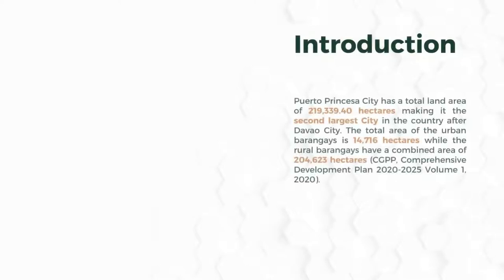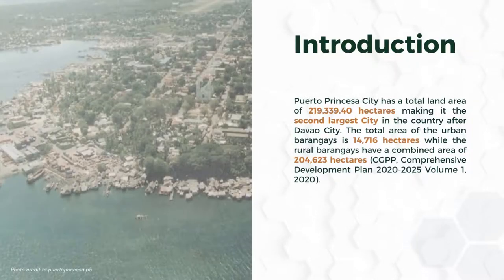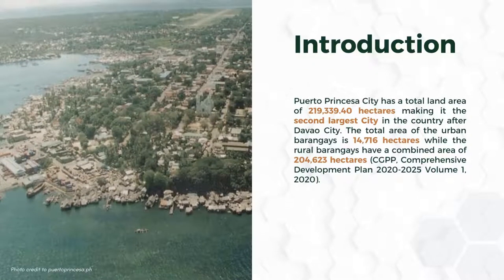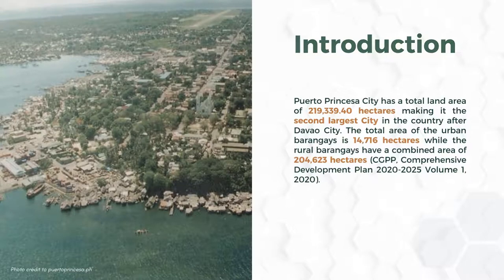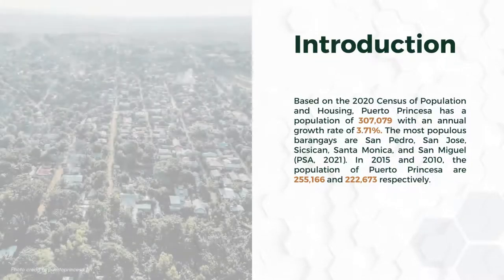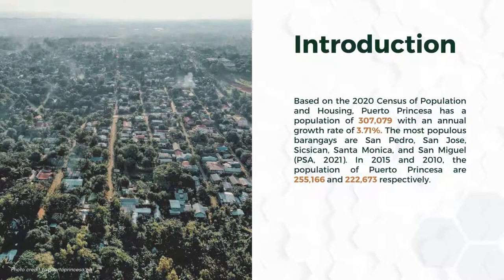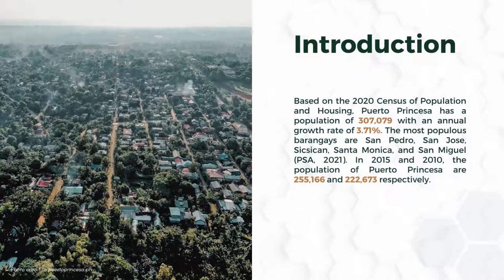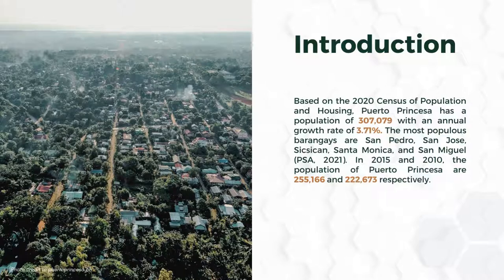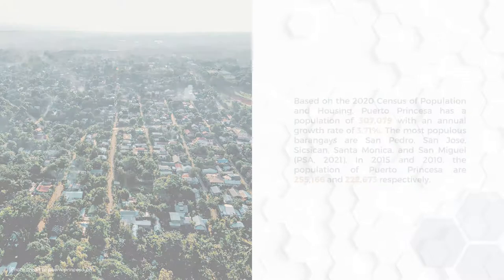Puerto Princesa city has a total land area of 219,339.40 hectares, making it the second largest city in the country. The urban barangay area is 14,716 hectares, while rural areas have a combined area of 204,620 hectares. Based on the 2020 census, Puerto Princesa has a population of 307,079 with an annual growth rate of 3.71%. In 2015 and 2010, the population was 250,166 and 222,670 respectively.